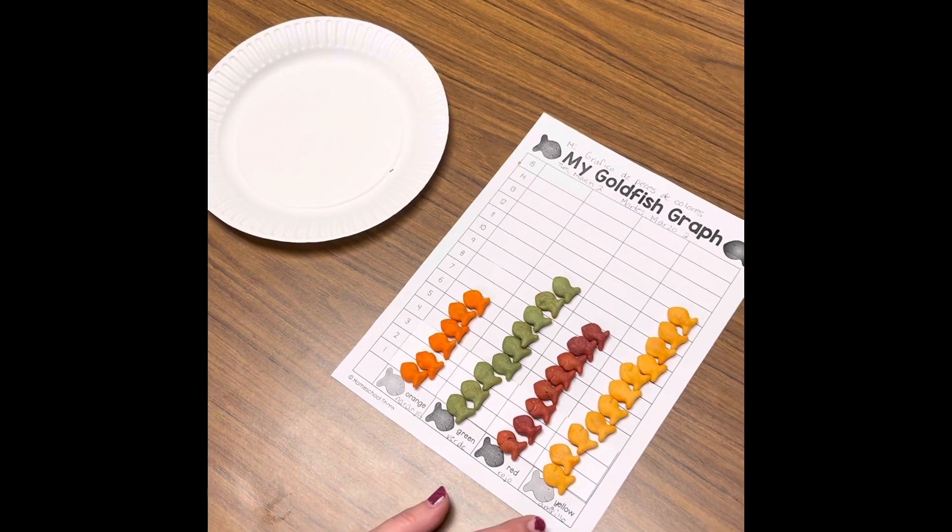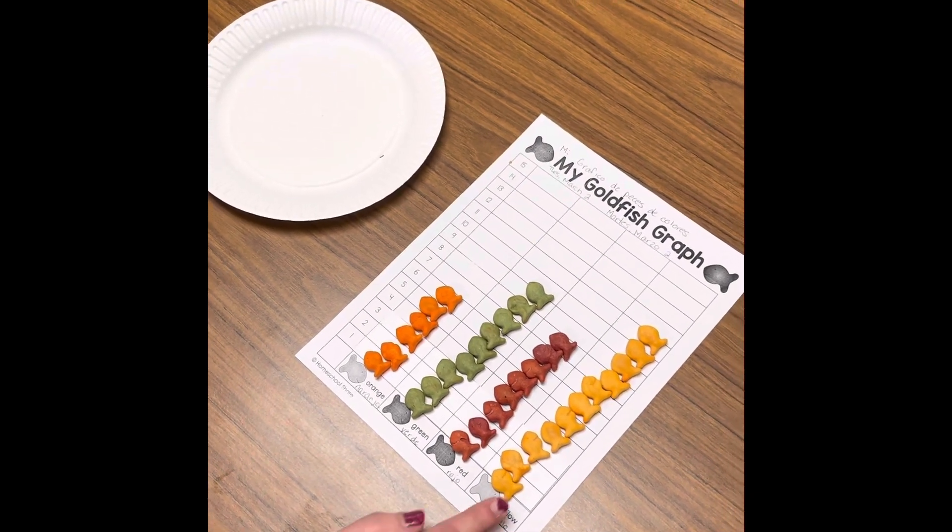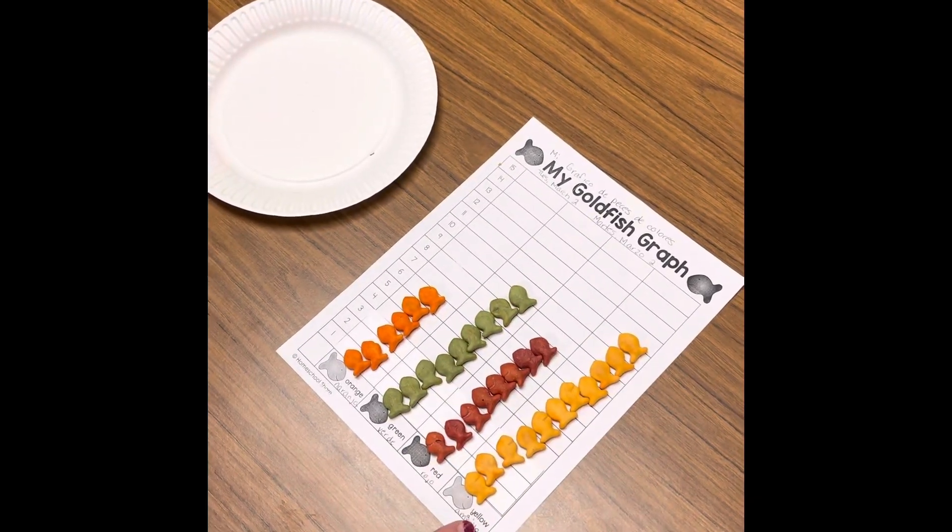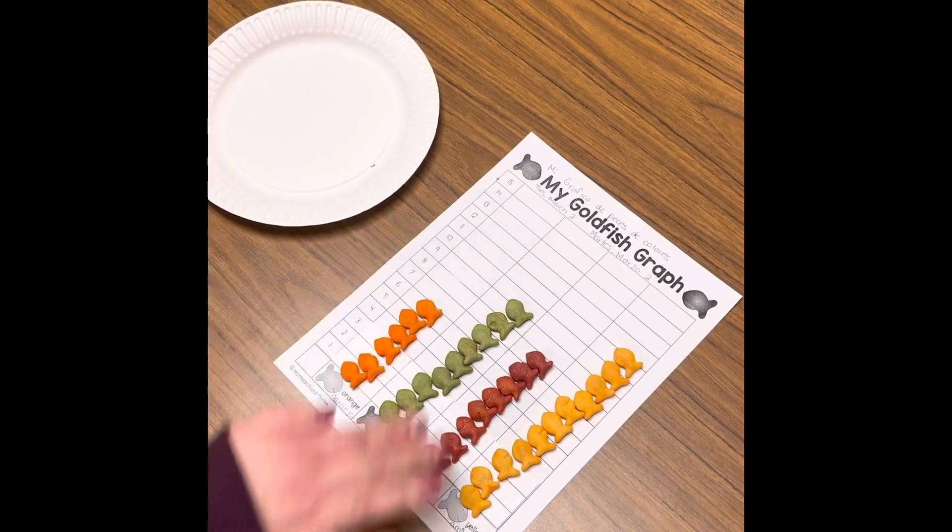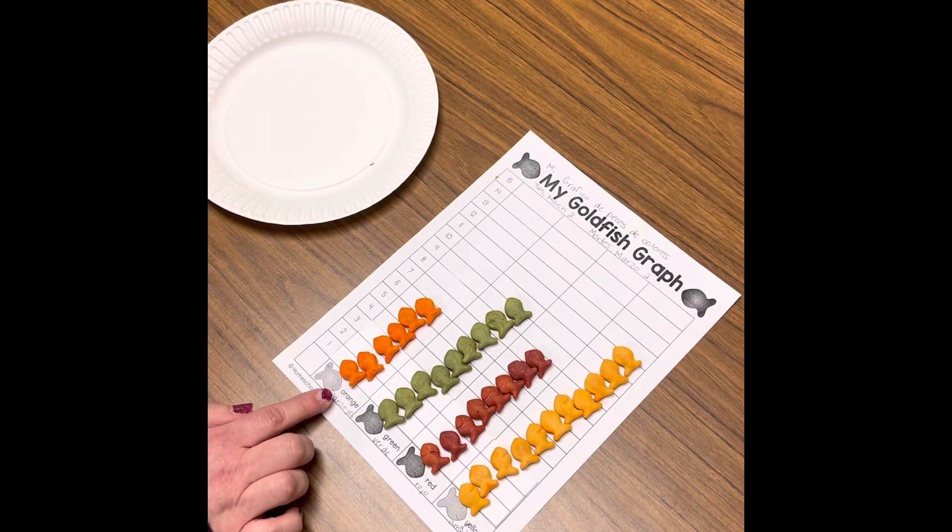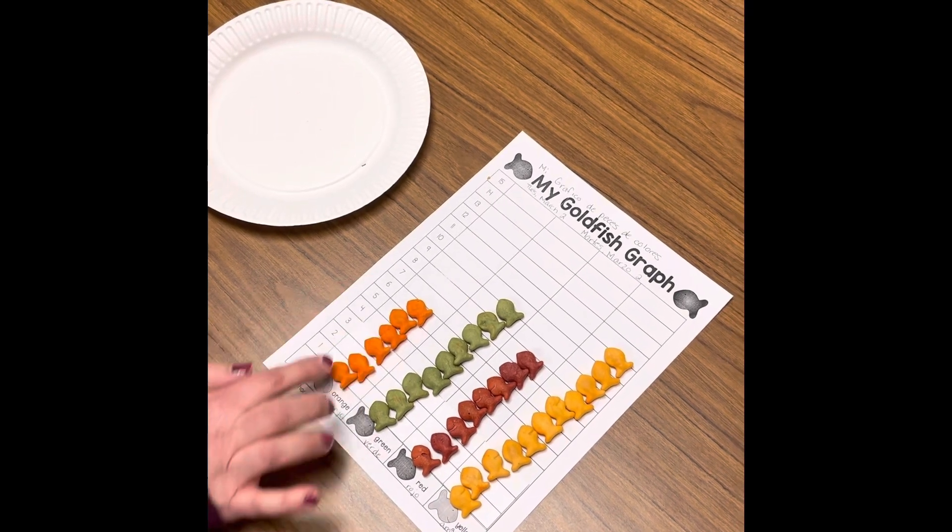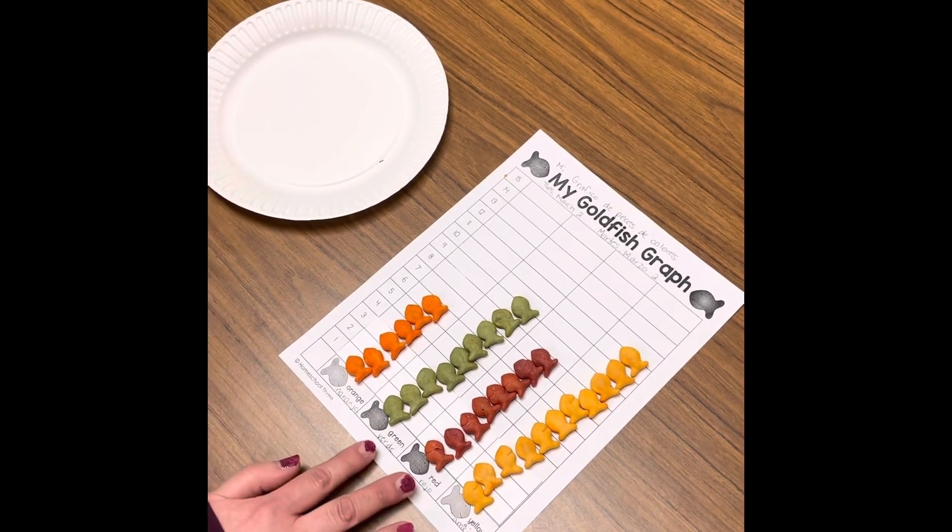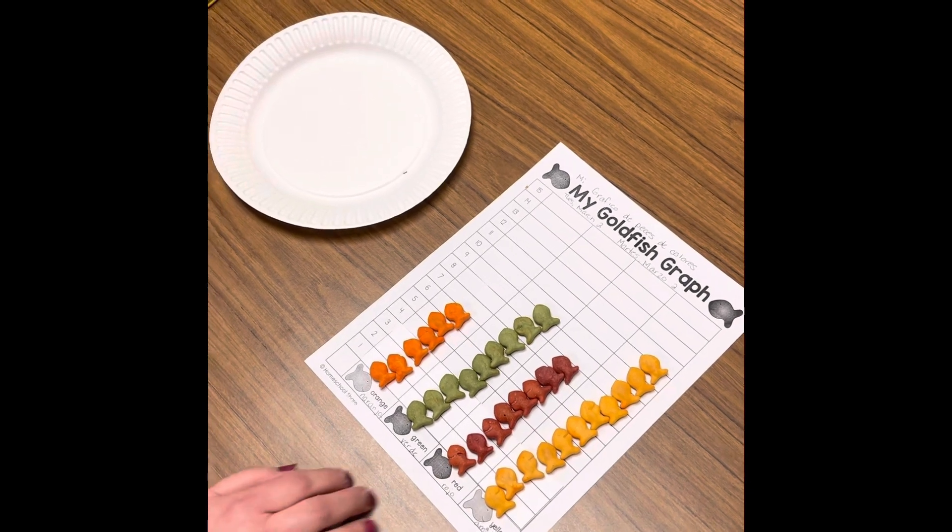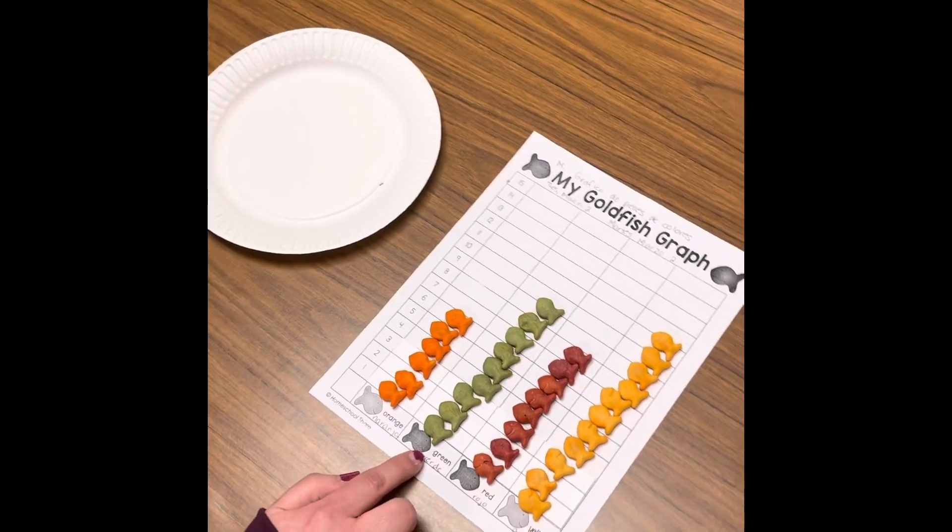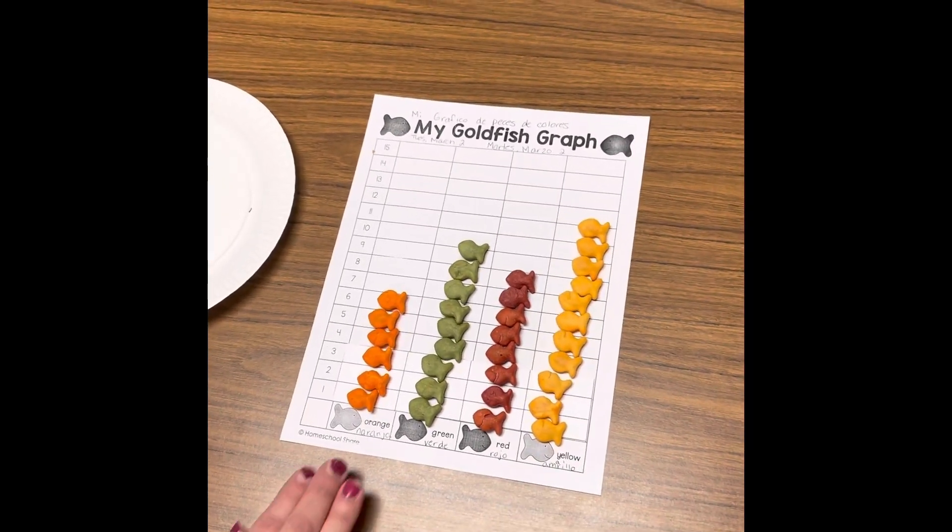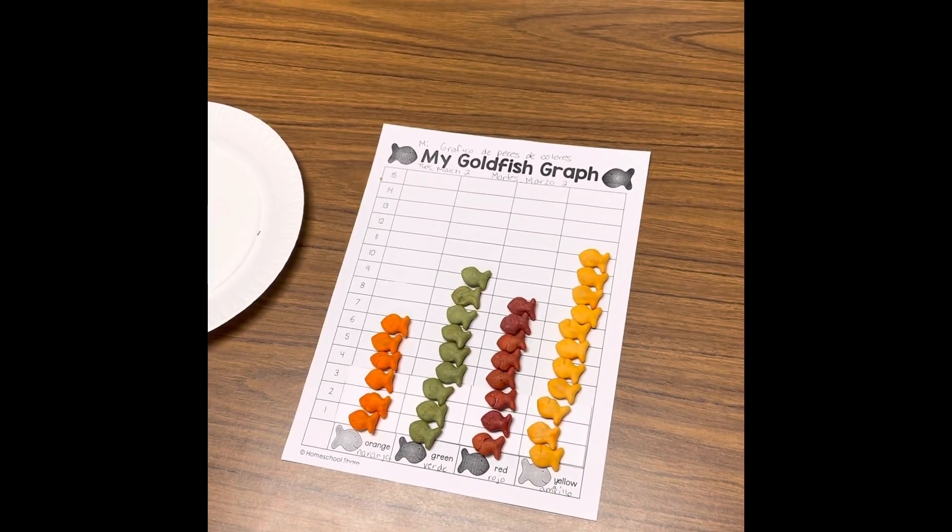Now that we're finished sorting, you can see that the tallest column, yellow, we have the most goldfish of, which is 11. The shortest column is orange. There's only six of them, and then the red and the green are in the middle with red being next and green being in the middle. So we have the most yellow goldfish and the least orange goldfish.